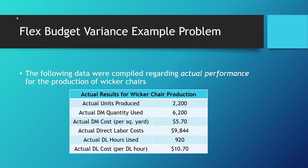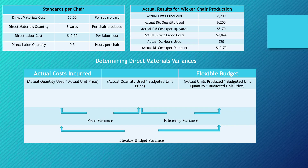Now we are going to compare what actually happened to the standards we set forth, doing a flex budget variance analysis to determine where our differences were from our expectations and which ones we should look at first to figure out how we can improve our performance.